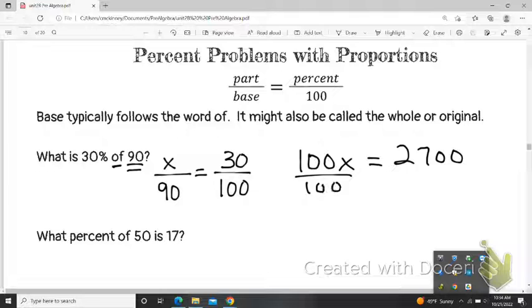You might just put that all in your calculator, 90 times 30, divide it by 100, and we get 27. So 30 percent of 90 is 27.